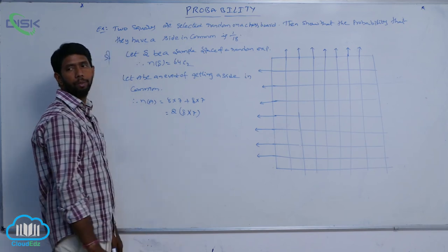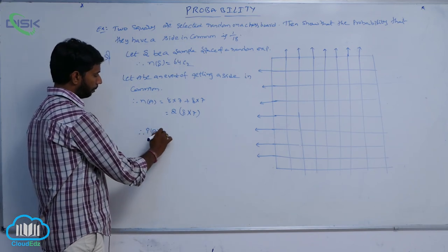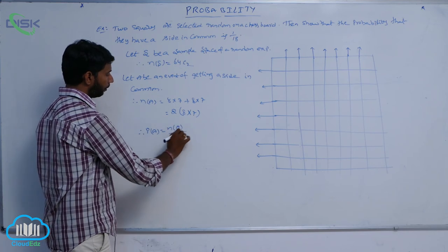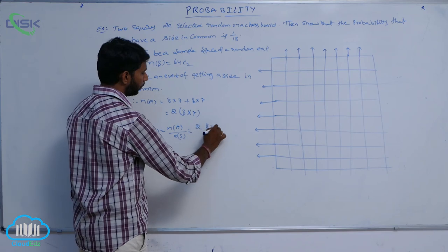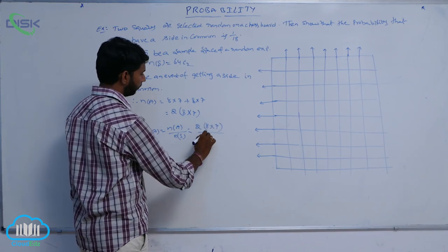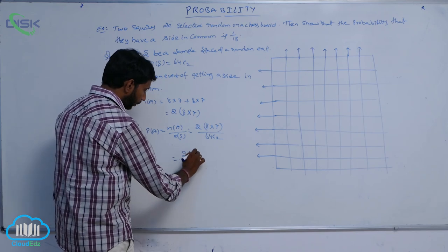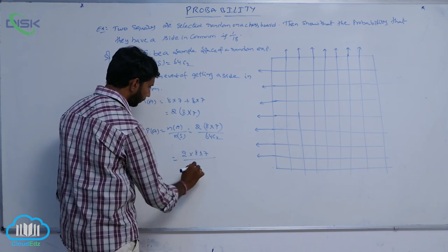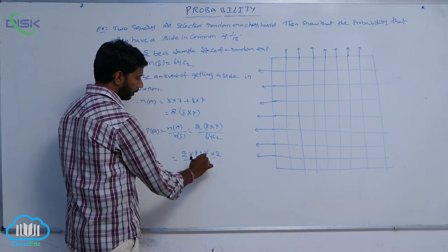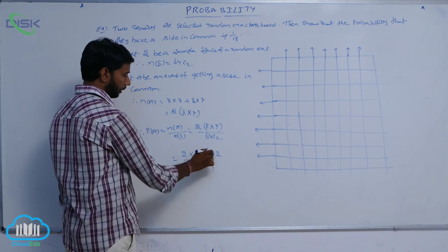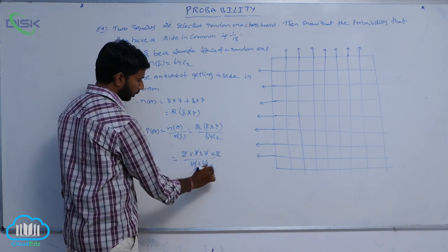N of A is equal to 2 into 8 into 7. N of S is 64 C 2. After cancellation, 7 times and 8 times cancel, giving us 1 by 18.